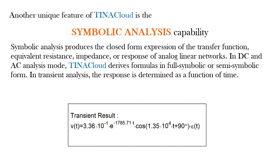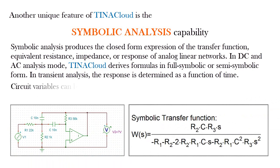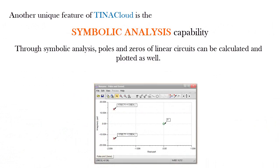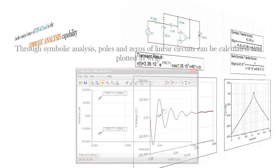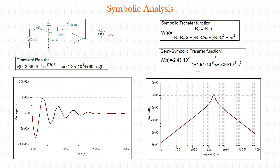In transient analysis, the response is determined as a function of time. Circuit variables can be referenced either as symbolic names or by value. Through symbolic analysis, poles and zeros of linear circuits can be calculated and plotted as well. For example, let's see the symbolic and numerical analysis results of an active bandpass filter.